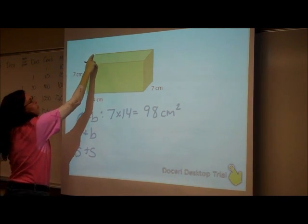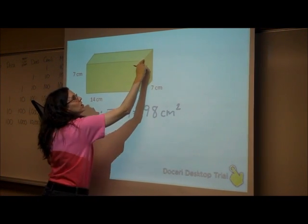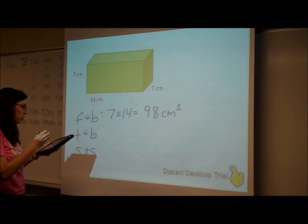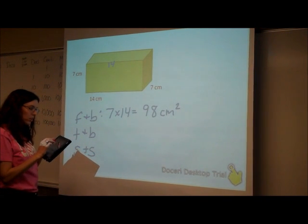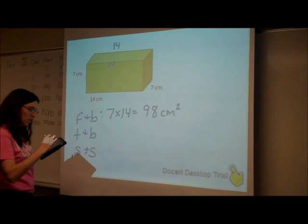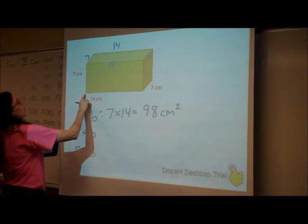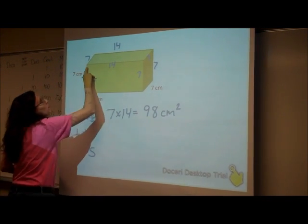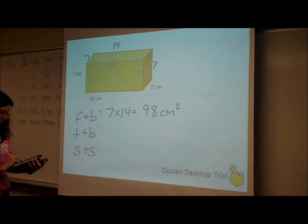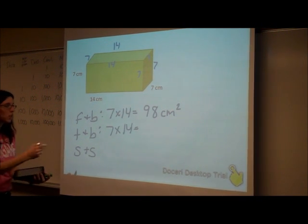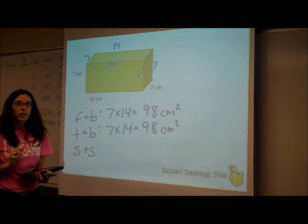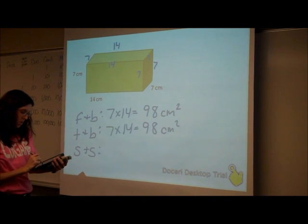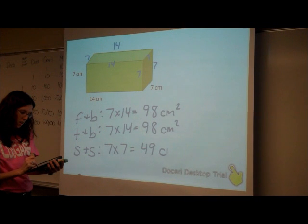For my top and my bottom, if I just look at my top, I need to know this side, which would be the same as here. These are all the same, so this is going to be 7 by 14. Go through and label all that if you need to — this is 14, so this side's going to be 14, this is 7, so this is 7. So looking at my top, it's easily 7 by 14, giving 98 square centimeters. Now looking at my side, one of my sides is going to be 7 by 7, which gives me 49 square centimeters.